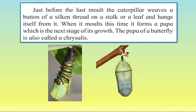When it molts this time, it forms a pupa, which is the next stage of growth. It weaves silk thread around itself and stays inside that. You can see in the first picture it has started to grow the last skin, and in the second picture it has grown the last skin completely and is inside. The pupa of a butterfly is called a chrysalis.